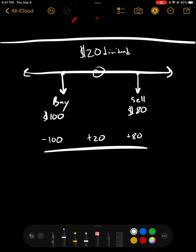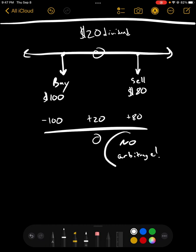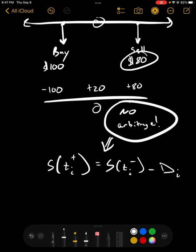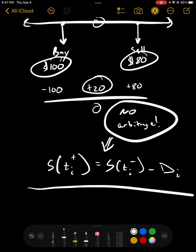So, that's what has got to happen. For no arbitrage to hold, we need it to be such that the price when approaching the payment time from the right is equal to the price when approaching the payment time from the left minus the dividend. This price has to equal this price minus the dividend. That is the only way to avoid arbitrage.